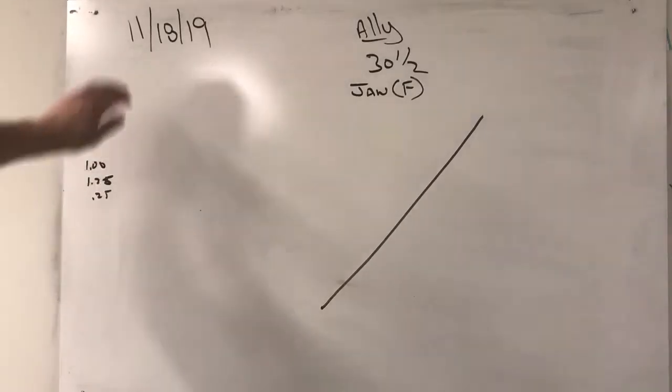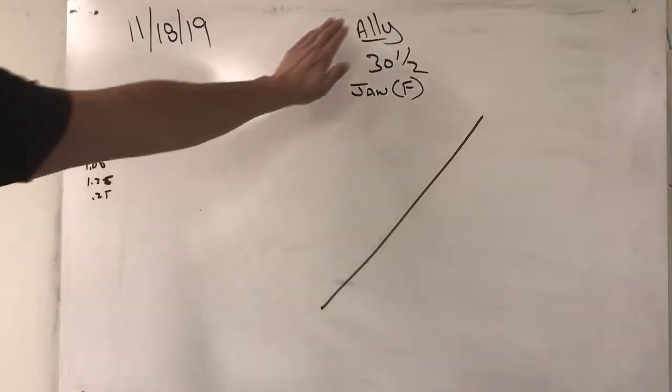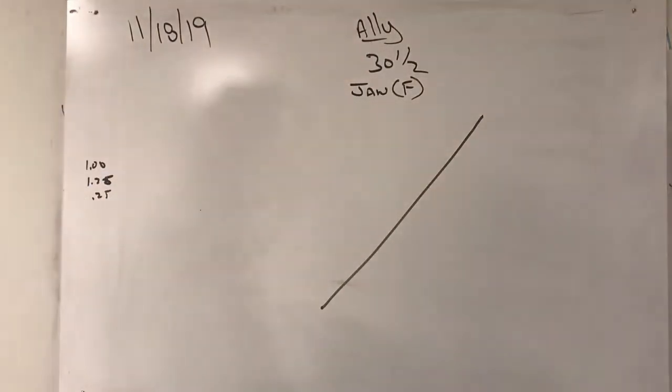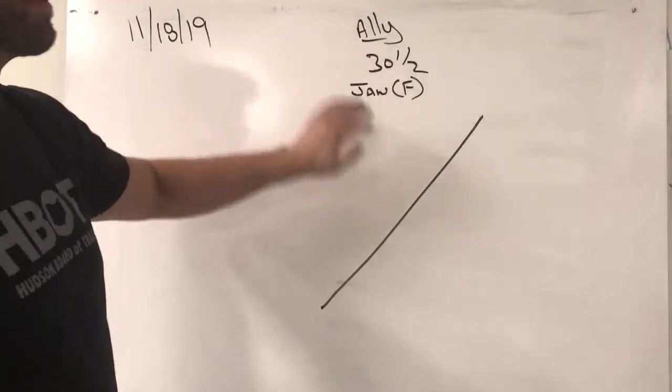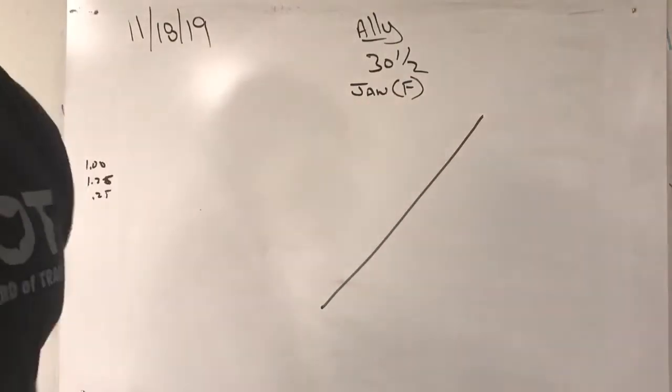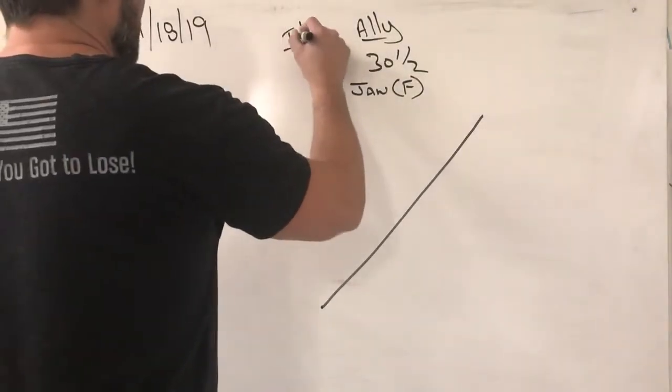All right, welcome to Thus and Boards Trade. Again, it's November 18th. We're looking at a stock Ally, a banking stock. It's currently trading 30 and a half and this trade is for January which the symbol is F and this again is for IT1.